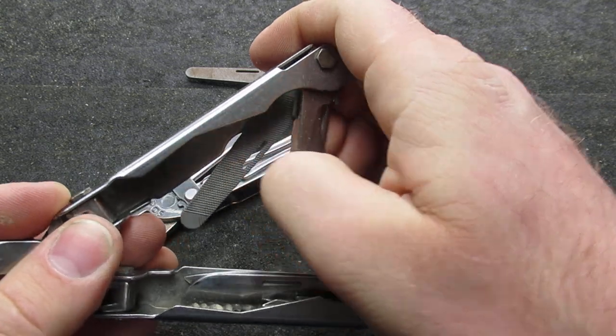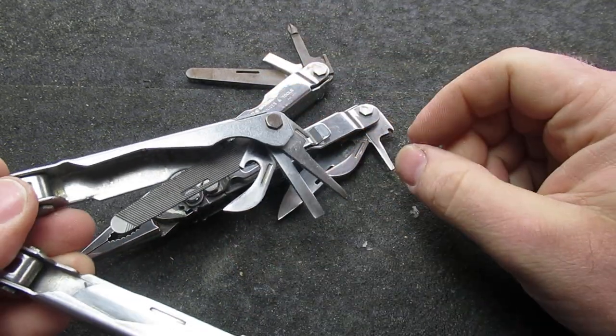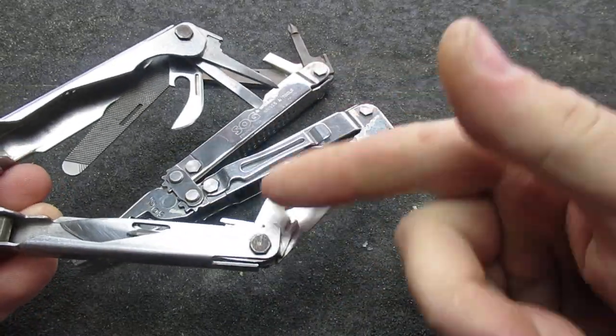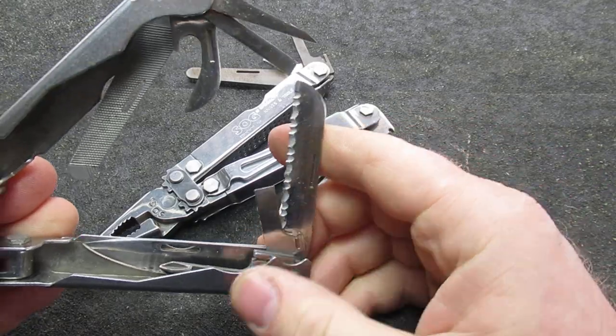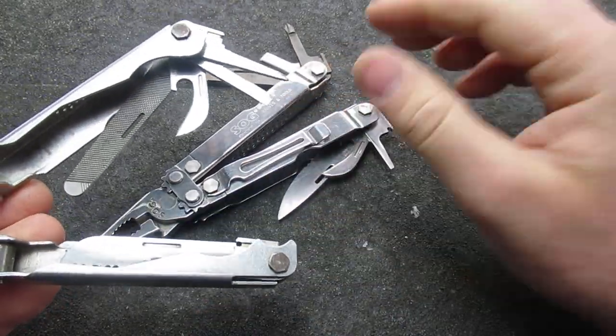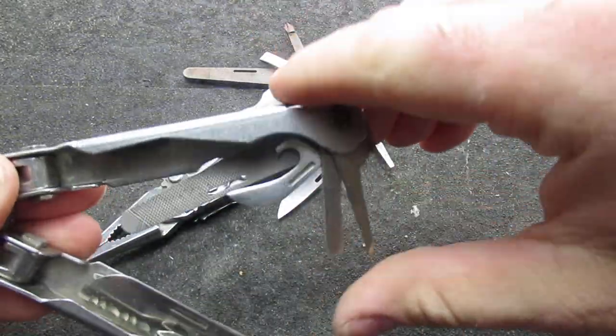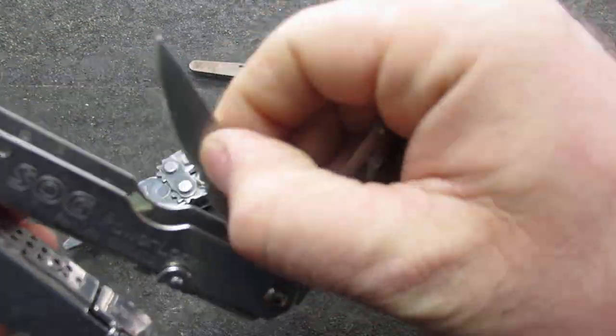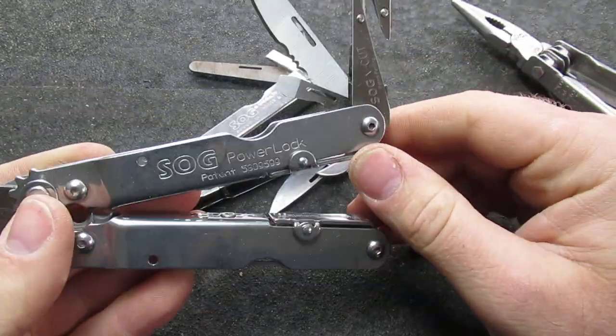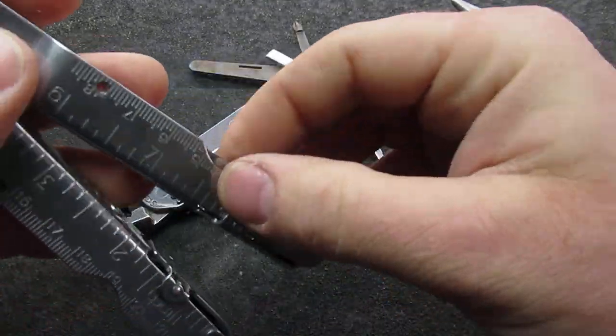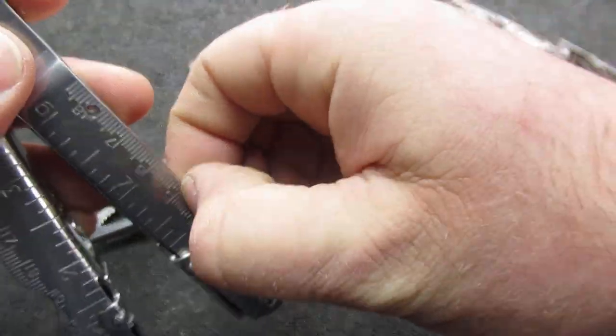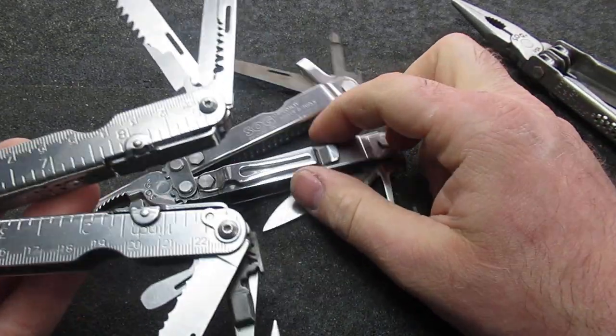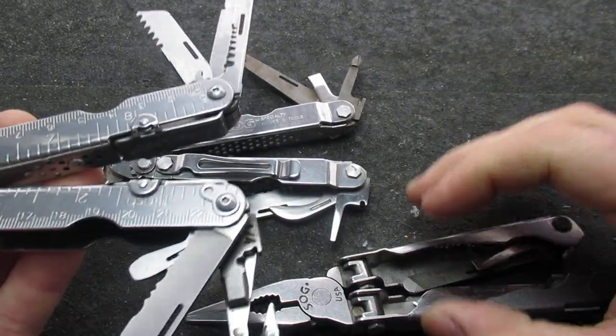For instance, the SOG Paratool as far as I know has the same tool set, the same tool size, and so you can swap - if you have a Paratool lying around and one of these tools breaks, you just get one from here, swap it in. This is actually the same with the Powerlock from what I understand. You can actually swap in and out of all these tools, I believe.